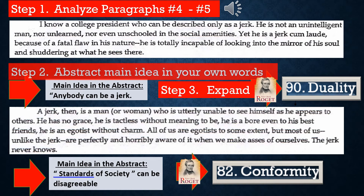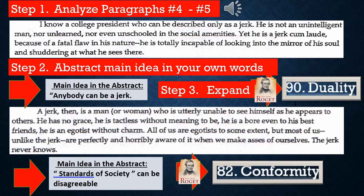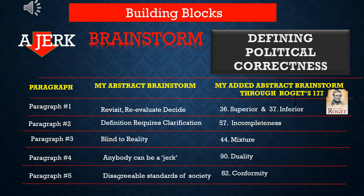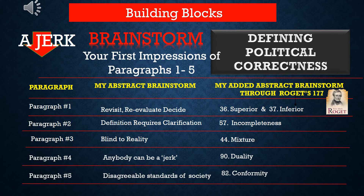We continue with the brainstorming pattern in paragraphs 4 and 5, coming up with our own main ideas in the blue boxes. Anybody can be a jerk for paragraph 4, and for paragraph 5, standards of society can be disagreeable. Those are what I came up with — you can come up with your own — and then we want to expand those to further review the abstract concepts of 90 duality and 82 conformity in paragraphs 4 and 5 as we continue to construct our own graphic organizer. Here's the final building block slide as we add paragraphs 4 and 5 and came up with number 90 duality and number 82 conformity.